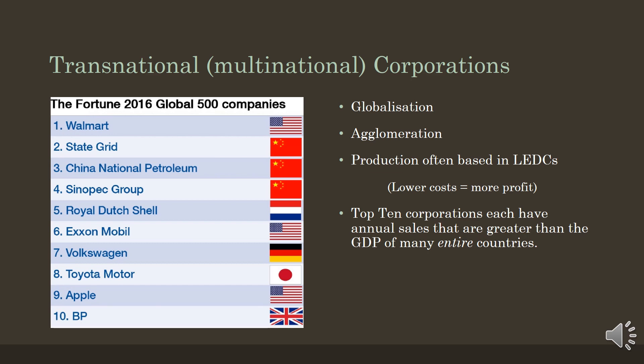Transnational companies have become some of the biggest and most powerful companies in the world. Many have operating budgets and profits exceeding the GDP of many countries. They include large car manufacturing companies like Volkswagen from Germany, Toyota from Japan, and General Motors from the USA. But also large clothing manufacturers such as Nike from the USA and Adidas of Germany, pharmaceutical companies such as GlaxoSmithKline in the UK and Pfizer of the USA, or food companies such as Nestlé of Switzerland and Del Monte of the USA.